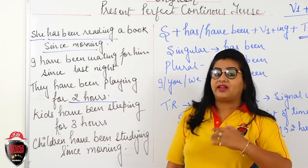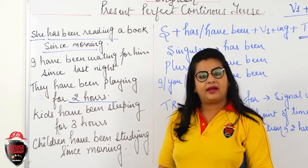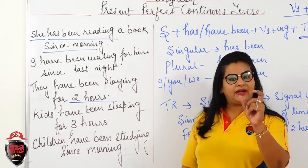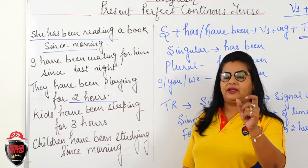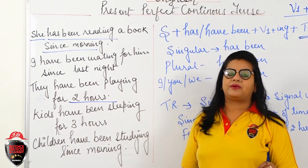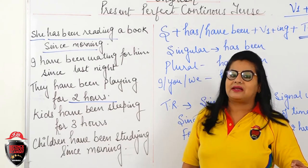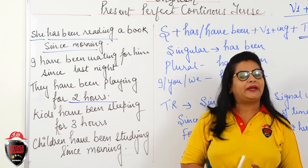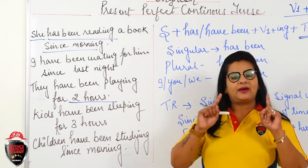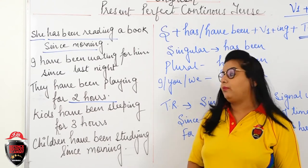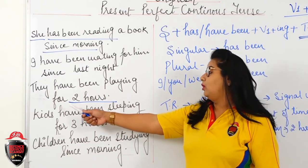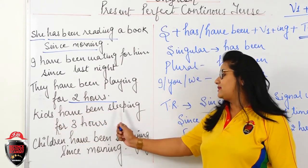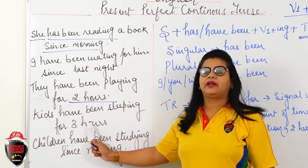We don't know the exact starting time — whether it was 9 o'clock or 10 o'clock. If we knew the starting point, we would use 'since.' But here a random time period of 2 hours is given, so 'for' is used when a time period or duration is given. One more example: 'Kids have been sleeping for three hours.'